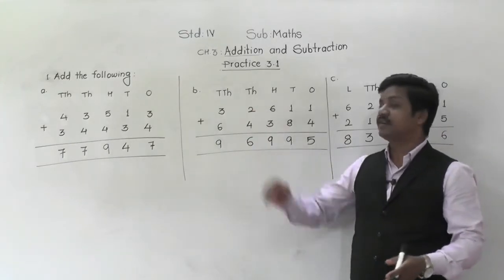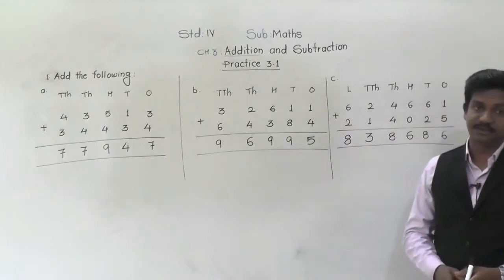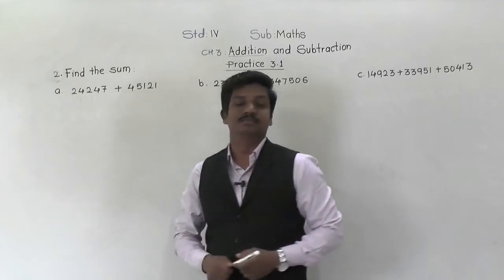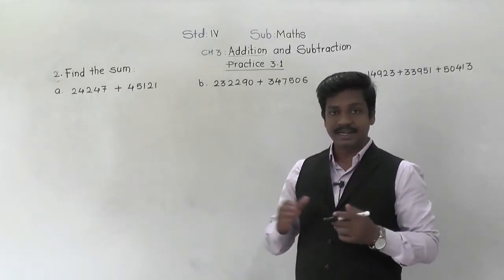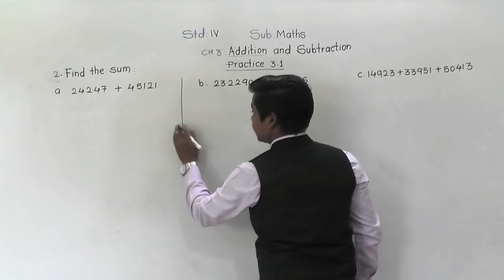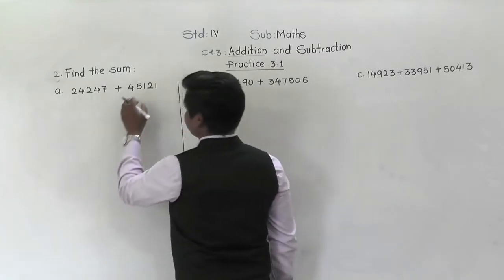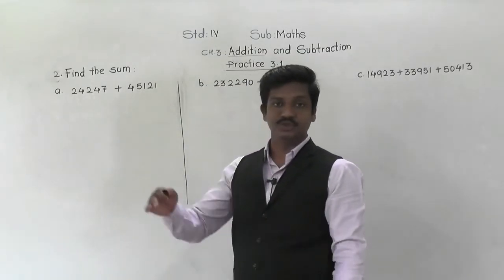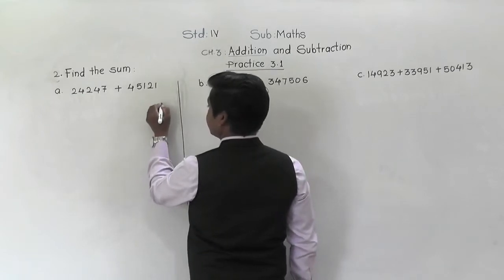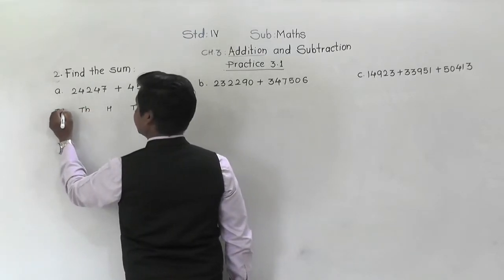This is how we can add five-digit or six-digit numbers. The fourth example in question one you have to solve by yourself. Now let's move to the next question in this practice: 'find the sum' — sum means addition. We have to find the addition of these two numbers. First, we have to put both numbers into columns according to their place values: ones, tens, hundreds, thousands, and ten-thousands.